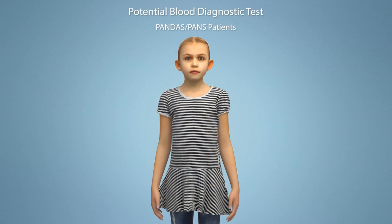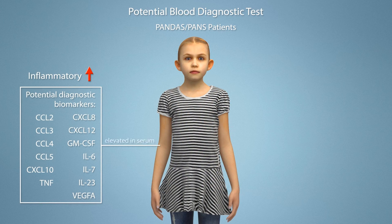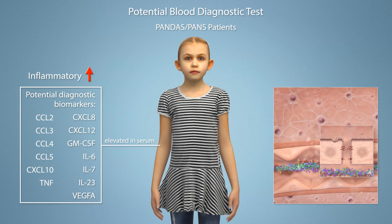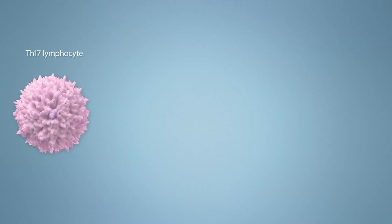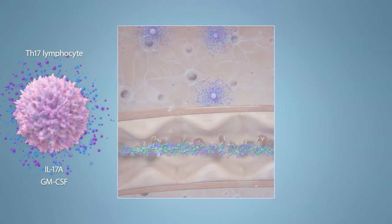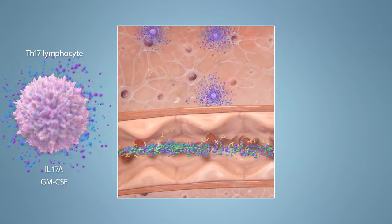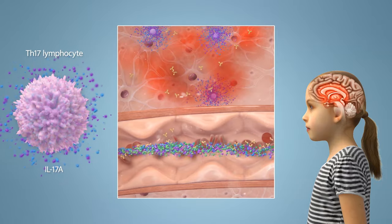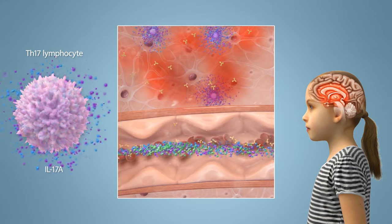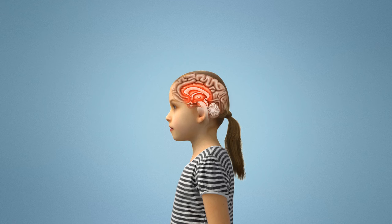Human studies have identified that a set of pro-inflammatory cytokines are highly elevated in PANDAS and PANS children at the acute phase of the disease. Additionally, these pro-inflammatory cytokines are able to break down the BBB in research experiments, implying that they may potentially trigger BBB breakdown in patients. This is the first study that has identified Th17 lymphocytes and cytokines IL-17A and GM-CSF as major players in causing the breakdown of the BBB after repeated group A strep infections in mice. Additional studies are currently underway to examine the role of Th17 cells or other immune cells in humans suffering from PANDAS and PANS.